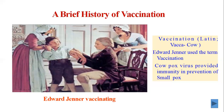But the mortality associated with variolation was much lower than that associated with naturally occurring smallpox. With this background knowledge, the modern concept of vaccination dates back to 1796, when Edward Jenner — based on empirical observation — used liquid from pustules of cowpox to introduce protective immunity in human individuals. Today, the use of cowpox as a vaccine is considered the landmark of the modern vaccination concept.